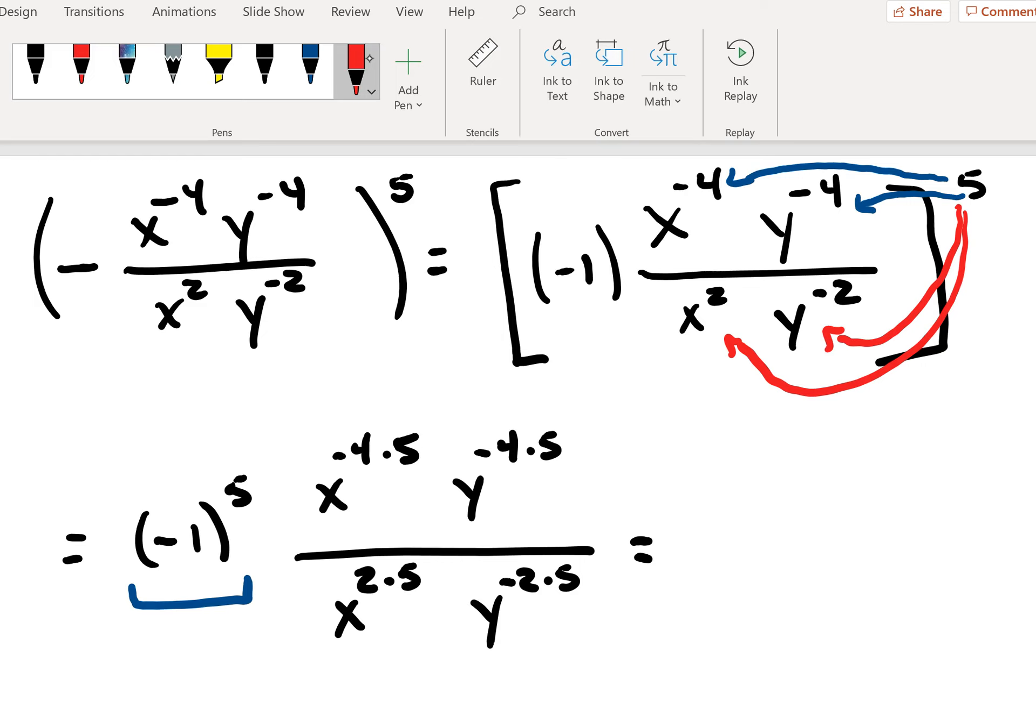And then y to the negative two times five in the denominator. And when we clean all this up again, you have negative one raised to the fifth power. It's an odd power of negative one. So you're left with a single negative sign.